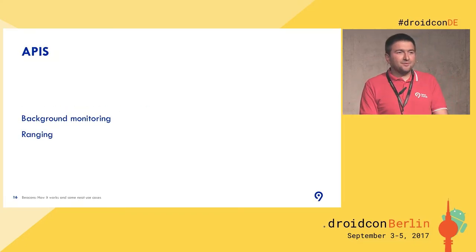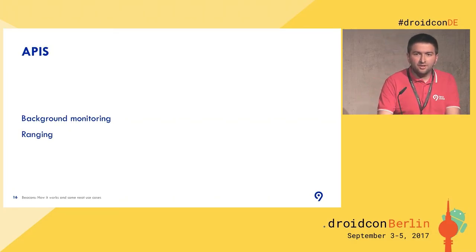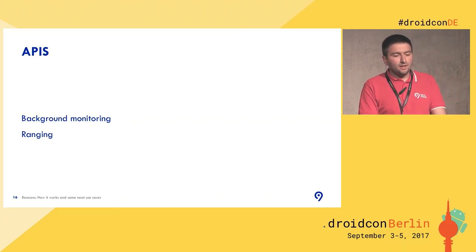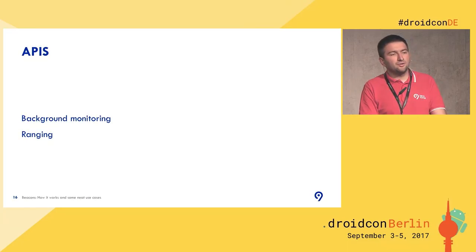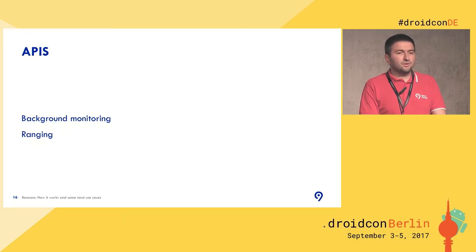There are two things we can do with these APIs. The first is background monitoring. You set up background monitoring in your app, and whenever a beacon whose ID you have configured is in range of the device, your app will get a notification.